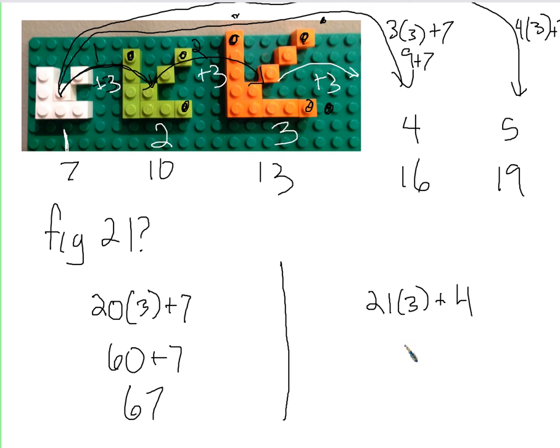But, 21 times 3 is 63 plus 4. It also gives us 67. Okay? And, as I showed you with figure 5, this works for any other figure number. I can put the figure number here times 3 plus 4, and it still works. So, what is up with this plus 4? It doesn't seem to make any sense. I don't see 4 anywhere here. This has 7 blocks. We go up by 3.